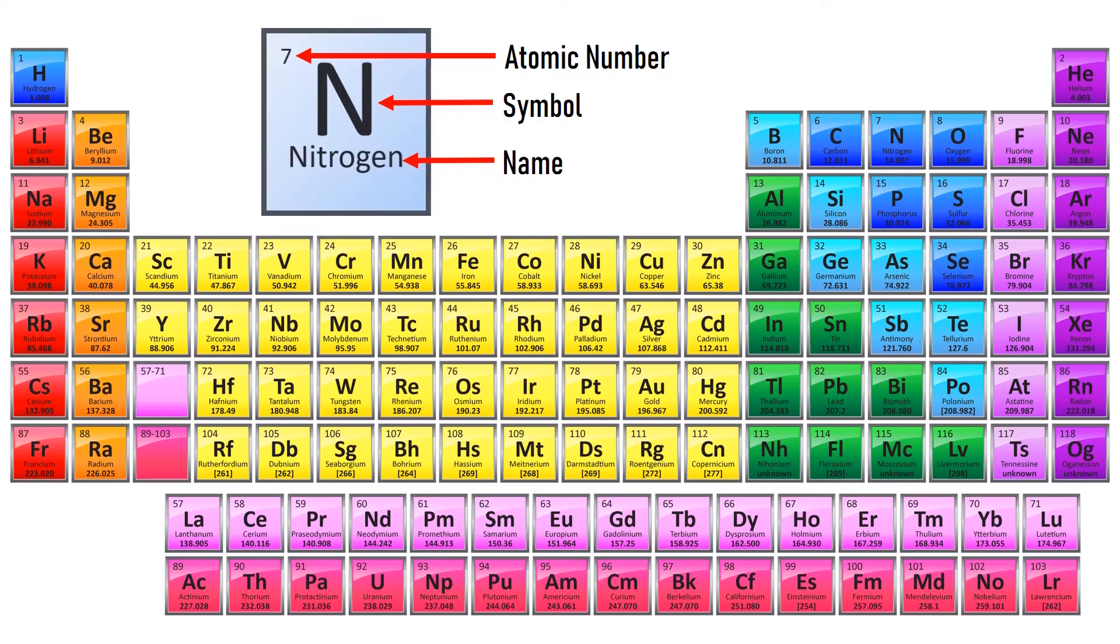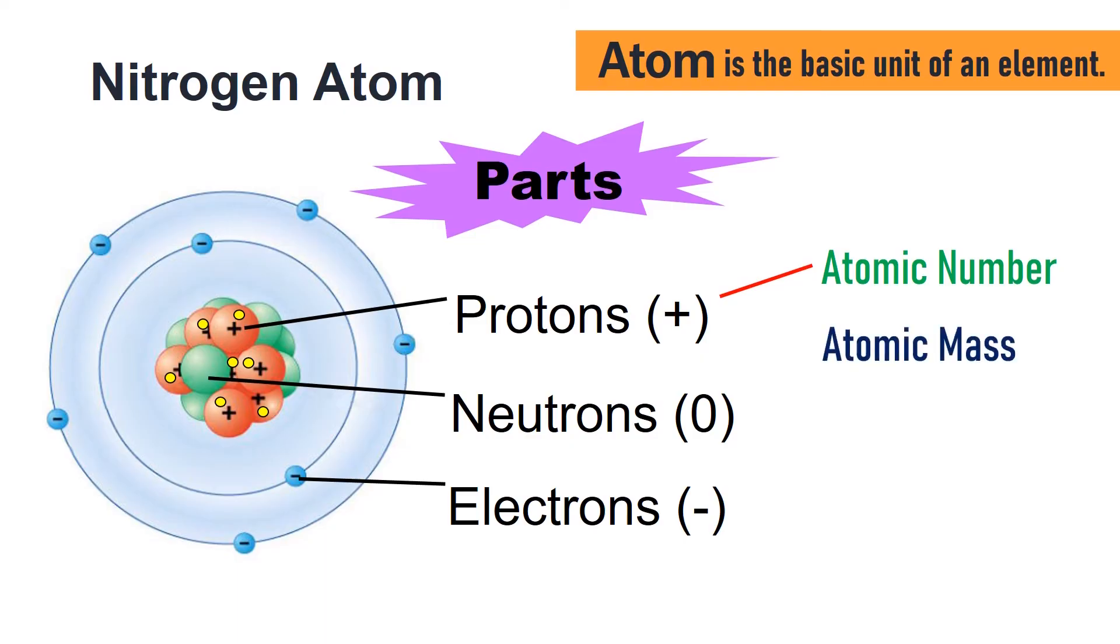Also, in each box, we will find the atomic mass at the bottom of each symbol. The atomic mass is the number of protons and neutrons.